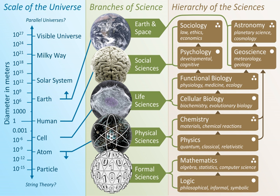Botany, plant science, or plant biology is a branch of biology that involves the scientific study of plant life. Botany covers a wide range of scientific disciplines including structure, growth, reproduction, metabolism, development, diseases, chemical properties, and evolutionary relationships among taxonomic groups. Botany began with early human efforts to identify edible, medicinal and poisonous plants, making it one of the oldest sciences. Today botanists study over 550,000 species of living organisms. The term 'botany' comes from Greek batan, meaning 'pasture, grass, fodder', perhaps via the idea of a livestock keeper needing to know which plants are safe for livestock to eat.